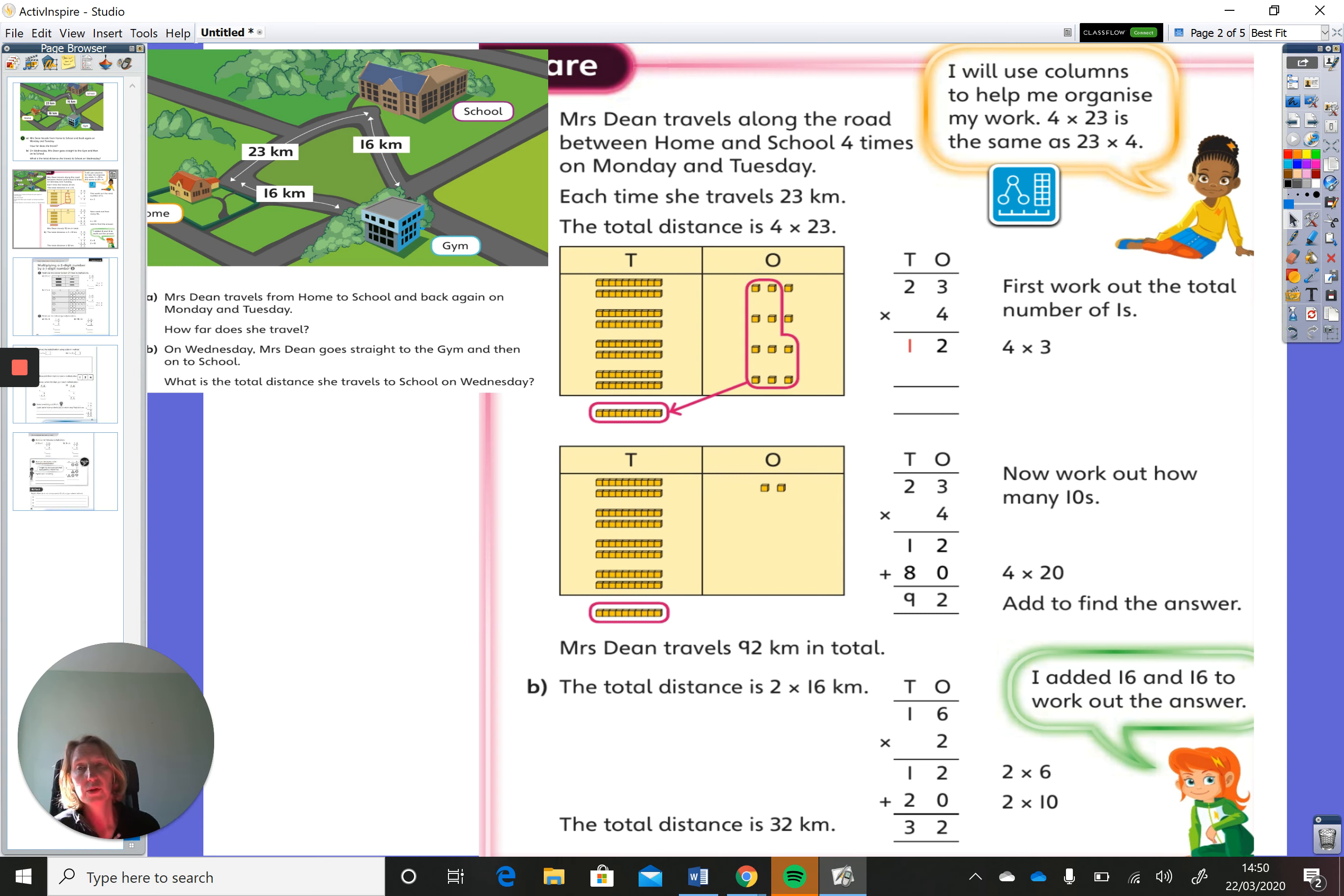The second question was, on Wednesday, Mrs. Dean goes straight to the gym and then on to school. What is the total distance she travels to school on Wednesday? And so what you want to look at on the map is the distance between the gym and then school. And what you will be calculating, or should have calculated, is 2 times 16.